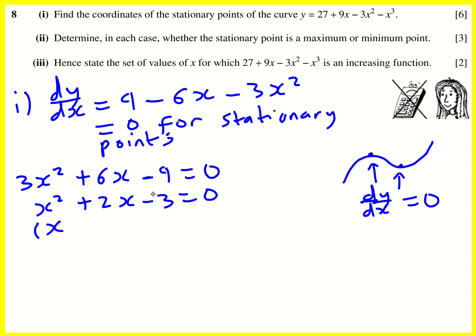So I need two numbers that multiply to give minus 3. One's going to be positive, one's going to be negative therefore. Add to give 2. That's going to give me plus 3 and minus 1. Therefore x1 is equal to minus 3. When I make this bracket zero,